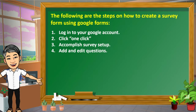Third, accomplish survey setup. Write a title for your survey and explain it in two sentences. There are three checkbox options displayed at the top of the survey form: sign in to view the form, users can add responses, and the respondent's username is automatically collected. Fourth, add and edit questions. There are six types of distinct questions in Google Forms. For a quick look on how to use and process Google Forms, including its advantages and disadvantages, let us watch it from Teacher Jeff of DepEdTV.